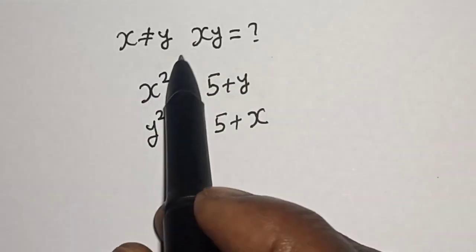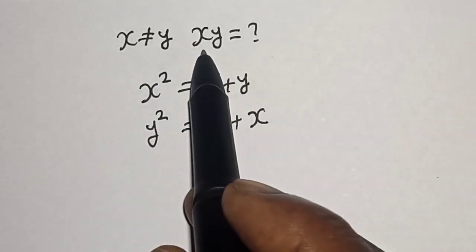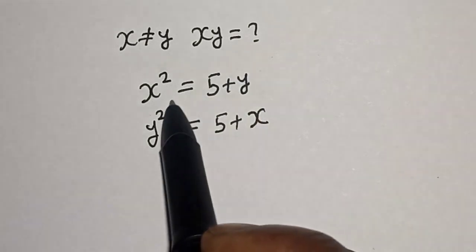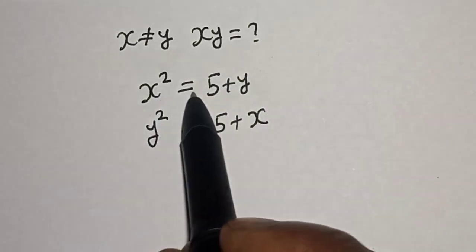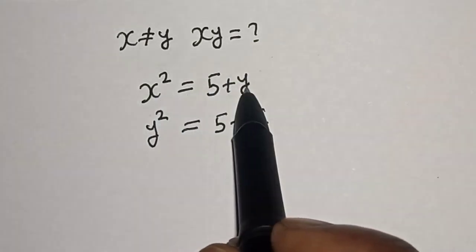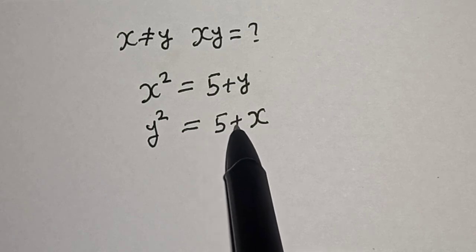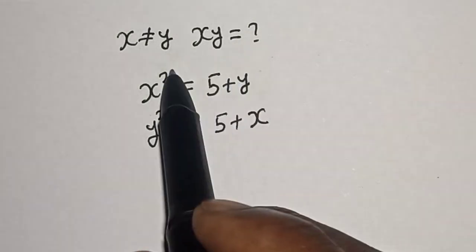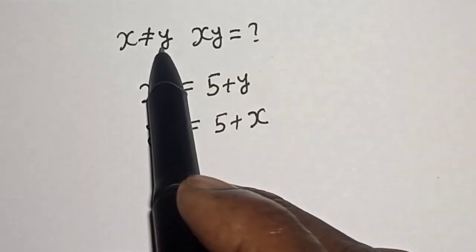Hi everyone, welcome to my class. In this class we want to find the value of xy from this given equation: x square is equal to 5 plus y, and y square is equal to 5 plus x, provided x is not equal to y.